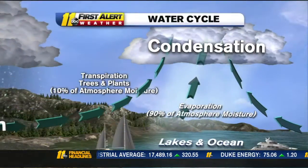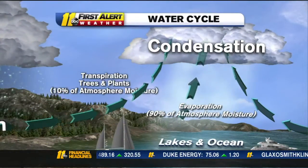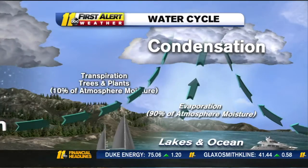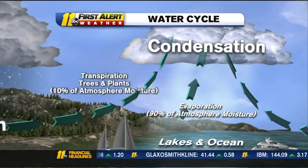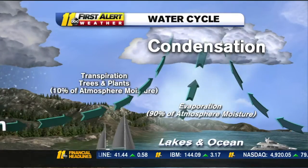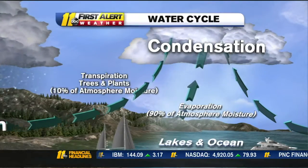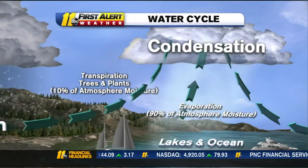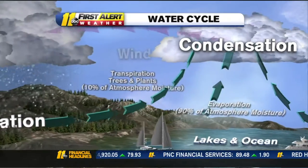Alright, what is transpiration and how does it affect the weather? Well Abby, it's all part of the water cycle. Transpiration is where water goes from plants into the atmosphere — that accounts for about 10% of the atmospheric moisture. The other 90% of moisture in the atmosphere comes from evaporation.